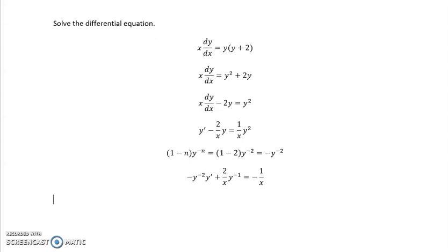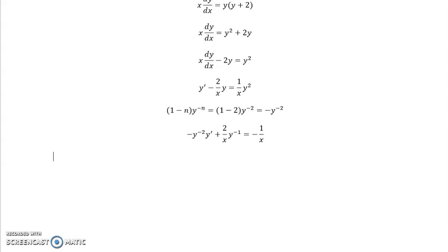Now the Bernoulli method is a substitution method, and so what we need to do now is we need to make our substitution. The term where the y used to be is now going to be what we substitute for. So our new variable is going to be z, and it's going to replace y^(-1), whatever this term is right here. Again, not the x, just the y component.